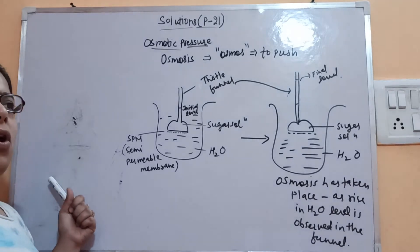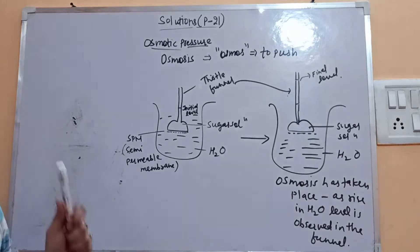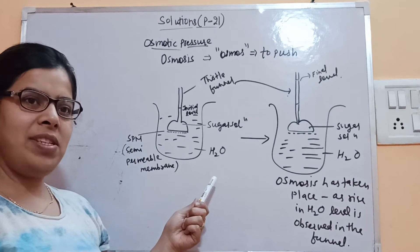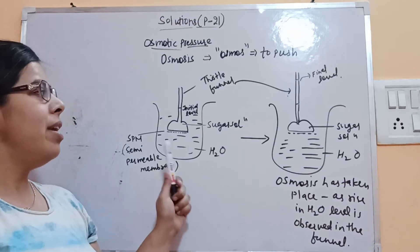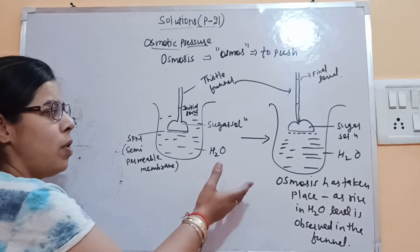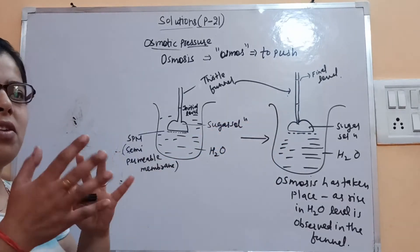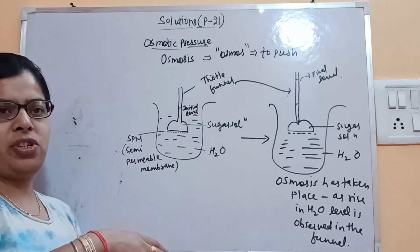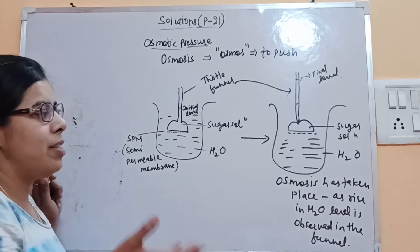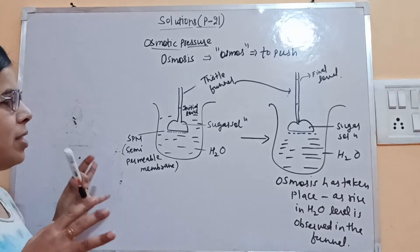Why is osmosis taking place? Osmosis takes place due to the difference in the vapor pressure of the solution and the solvent. As we have already studied, lowering in vapor pressure takes place when any non-volatile solute is added to the solution. The pure solvent has its own vapor pressure, and the solution has its own vapor pressure. To maintain that equilibrium, water molecules are pushed to the side where low water concentration exists.